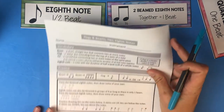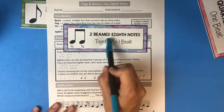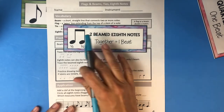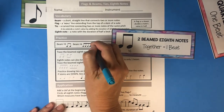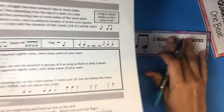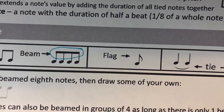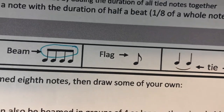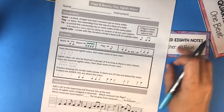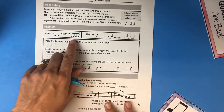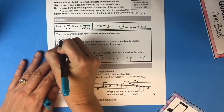Let's talk about beams and flags. Two beamed notes are eighth notes. If you have four beamed notes with only one beam, they're still eighth notes. You can beam together two, four, or sometimes six eighth notes. The most common is two, but four is also seen. If it's one beam, the note's value is divided in half one time — those are eighth notes.